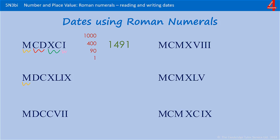Next one — we have 1000. Then we have 500, but next to that is another 100, so we're adding that on — that's 600. Then we have a 10, but it comes before 50, so that's 40. And then we have a 1, but that comes before a 10, so that's 9. That's 1649 — the year Charles I was executed.